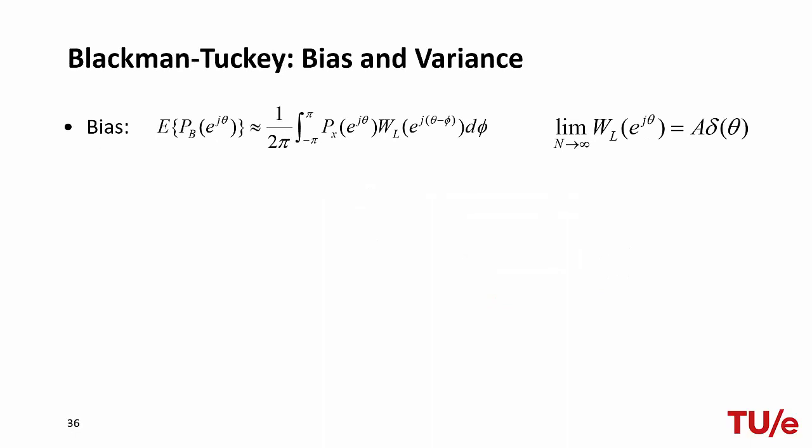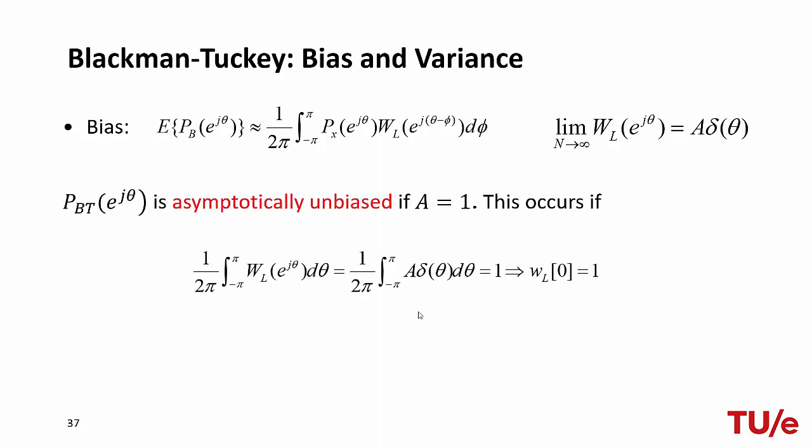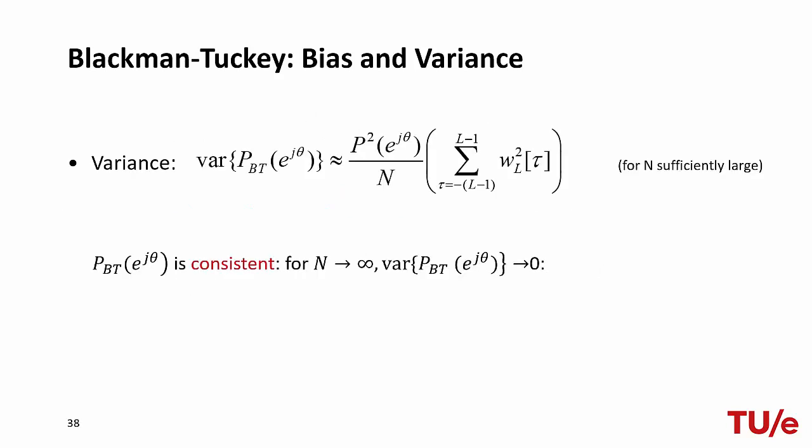The sufficient condition for admissibility is that in the frequency domain we have a non-negative window transform, and in the time domain a positive semi-definite window function. The expected value of the Blackman-Tukey correlogram is given by the convolution between the true spectrum and the transform of the window function, and thus it is biased. The estimator is asymptotically unbiased only when the window function converges to a delta pulse with unit amplitude — equivalently, when the window function is 1 for lag equal to 0, or the integral of the window in the frequency domain equals 1. The variance of the Blackman-Tukey estimator scales with N, so it is a consistent estimator of the power spectral density.